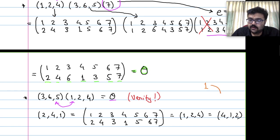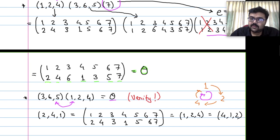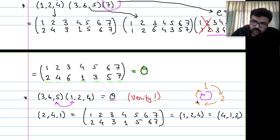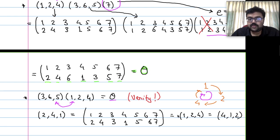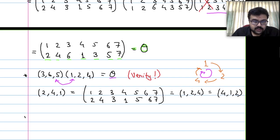The cycle (2, 4, 1) is the same as (1, 2, 4) and (4, 1, 2) — these are all the same cycle written in cyclic order. So theta can be expressed in many ways: as (1,2,4)(3,6,5), or (2,4,1)(3,6,5), or (3,6,5)(1,2,4), etc.